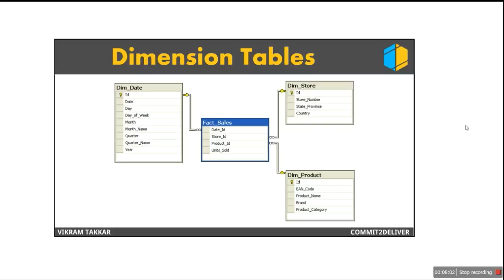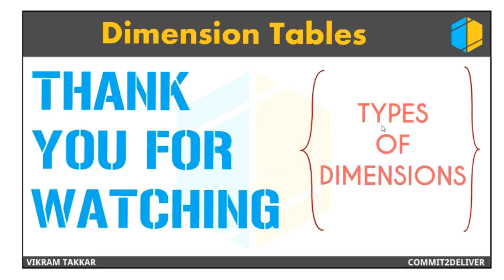Similarly, we have store dimension table which contains the store number, store IDs, and information about the store as to where it is located. And we have a date dimension. Date dimension is a very important dimension in every data warehouse. What it contains is pre-calculated values for a date. For example, what is the day number, what is the month number, what is the quarter, what is the name of the month, what is the day of the week for a particular date. So we pre-calculate for a defined period so that when we join we don't have to calculate at runtime.